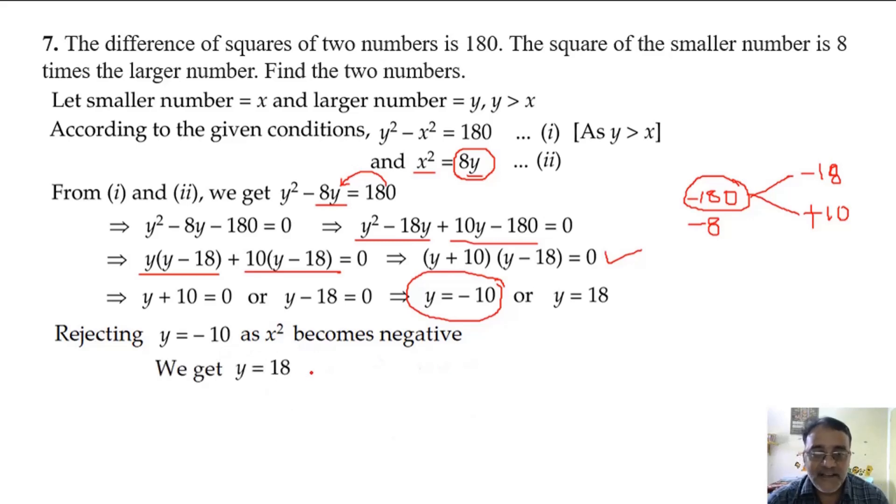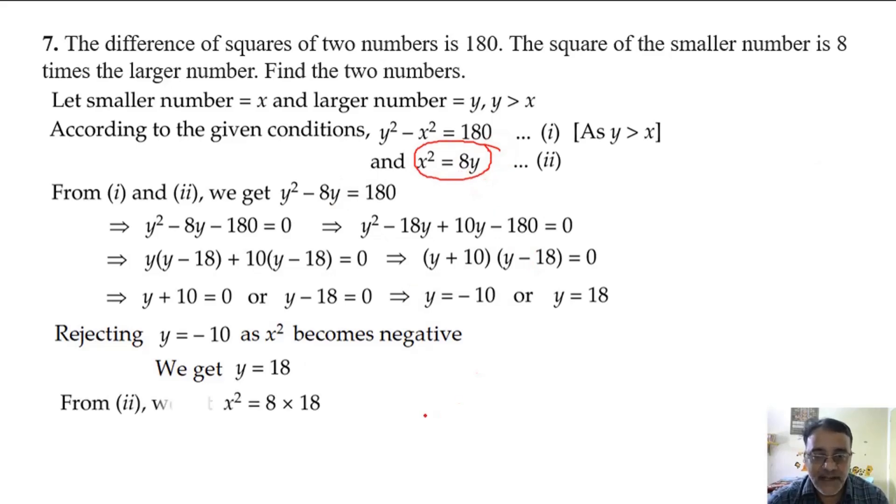So we will get y is equal to 18. So substitute y here. x square will become 8 into 18, that is 144. So what is the value of x? We will write plus minus 12 because x can be negative.